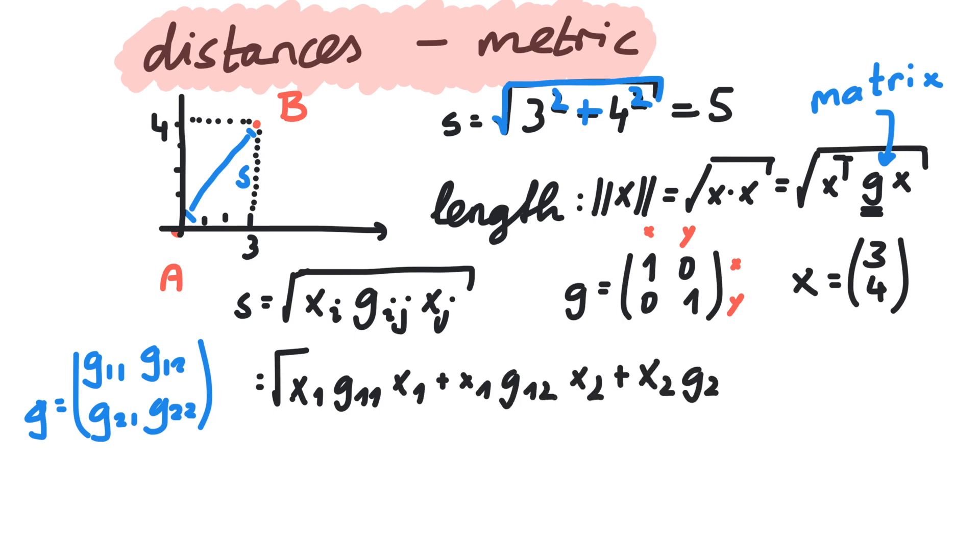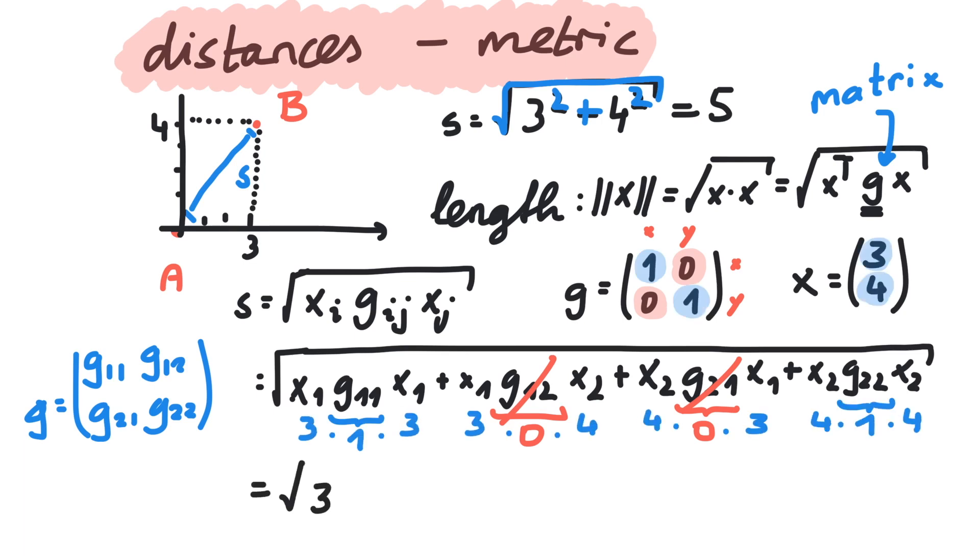If we write out this inner product, we see that certain terms vanish because of the metric. This leaves us with the same value as before, 5.